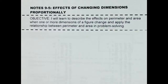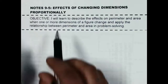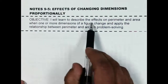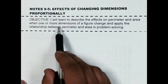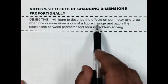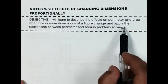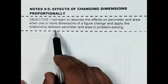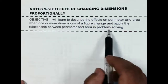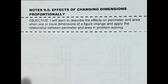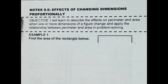We're going to talk about today the effects of changing dimensions proportionally. The objective: I will learn to describe the effects on perimeter and area when one or more dimensions of a figure change, and apply this relationship between perimeter and area in problem solving.